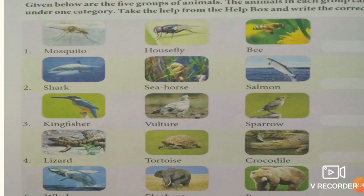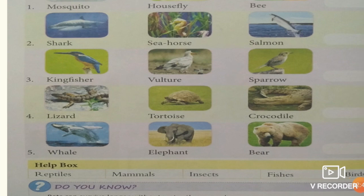Lizard, tortoise, crocodile — reptiles. And then wolf, elephant, bear — these are mammals. So the order is: insects, fishes, birds, reptiles, mammals. The help box is given; use it and write with correct spelling, children — this is very important.